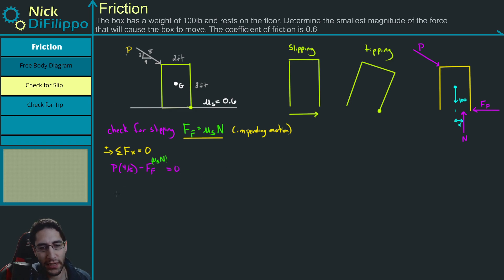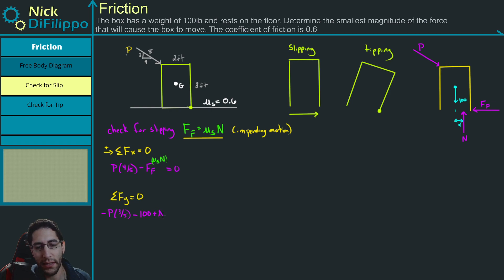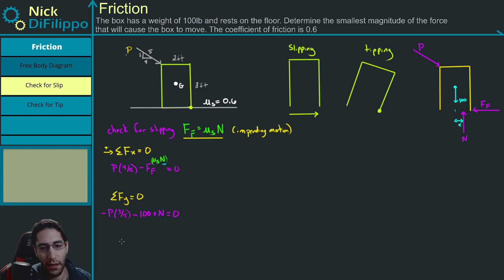Then we look at the sum of the forces in Y, equal to zero. We have P times three over five — that's a minus because it's pointing down — minus 100 which is my weight, plus some normal force N, equals zero. So now we have two equations and two unknowns: we don't know what N is and we don't know what P is. Solving the Y equation: N is equal to three-fifths P, or 0.6P plus 100.